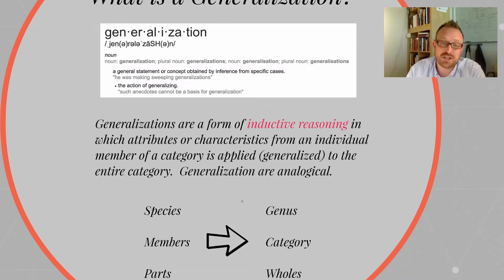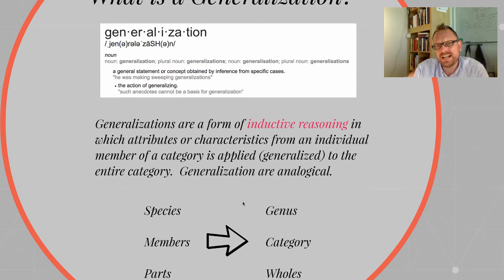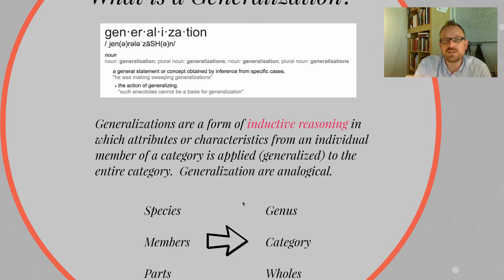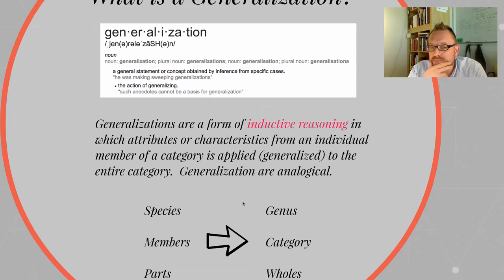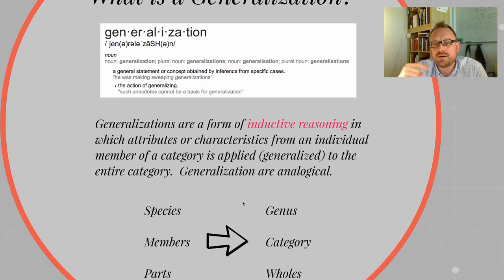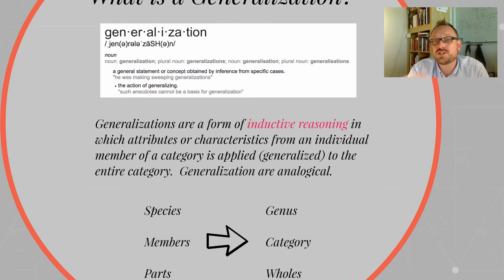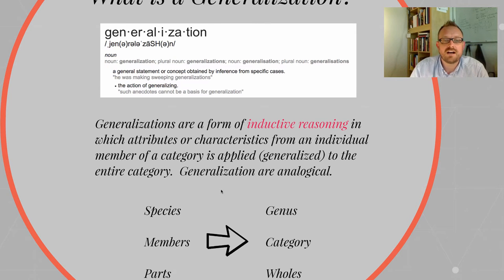Generalizations are fundamentally analogical — they're types of analogies. An analogy is basically when we take characteristics between two things and then try to apply them to something else. For instance, by analogy, we can say that all students are people who are studying. Therefore, a school is made up of students, so a school must have all people in it who are studying. You can see it's fundamentally the construction of an analogy.